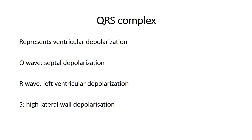The next part of the QRS complex is the R wave — a positive upward deflection that represents depolarization of the left ventricular myocardium. The left ventricle is referenced here because it's generally bigger in size and bulk than the right side, and therefore its depolarization overlaps or obscures that of the right ventricle.